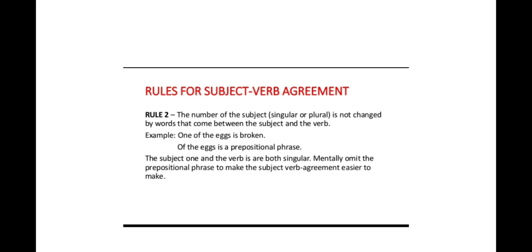is not changed by words that come between the subject and the verb. For example, 'one of the eggs is broken.' 'Of the eggs' is a prepositional phrase. Here, the subject 'one' and the verb 'is' are both singular.